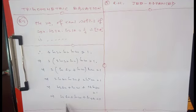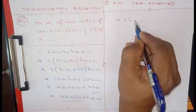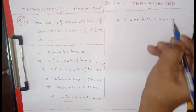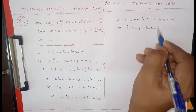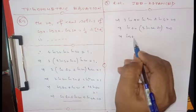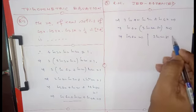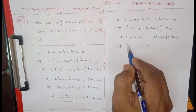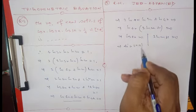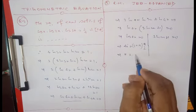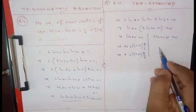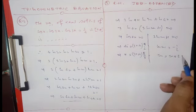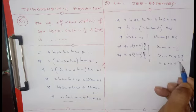Expanding cos(4x)·cos(2x) using product-to-sum gives (1/2)[cos(6x) + cos(2x)], and 2cos²(2x) = 1 + cos(4x). So we get cos(6x) + cos(2x) + cos(4x) = 0. Applying cos C + cos D = 2cos((C+D)/2)cos((C-D)/2) to cos(6x) + cos(2x) gives 2cos(4x)cos(2x). So cos(4x)[2cos(2x) + 1] = 0, yielding cos(4x) = 0 or cos(2x) = -1/2.